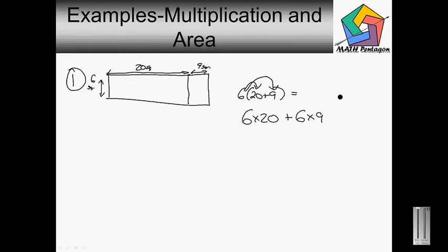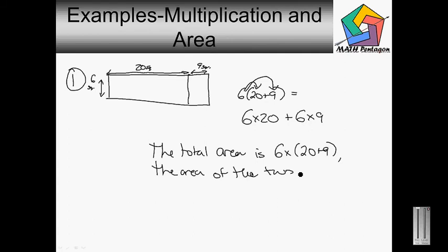So, let's write this out. The total area is 6 times parenthesis 20 plus 9. The area of the two parts are 6 times 20 and 6 times 9.